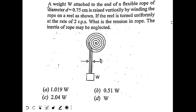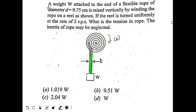Here we have a spool where we are winding a rope. The spool is rotating, and by winding the rope, the rope is rising upwards, and because of that the block is also rising upwards. We have to find the tension in the rope.